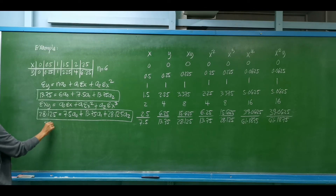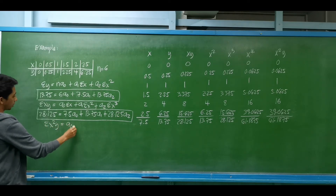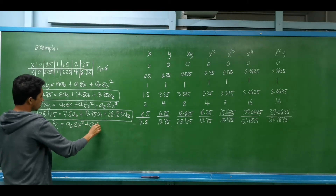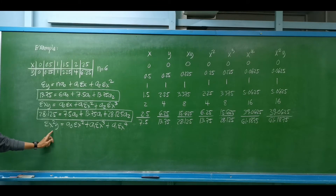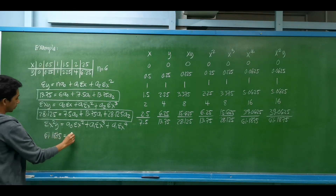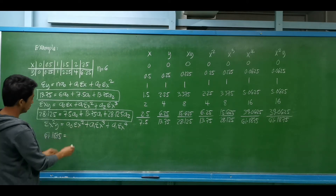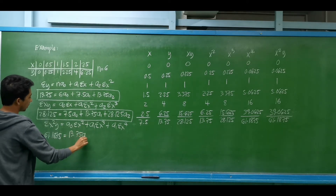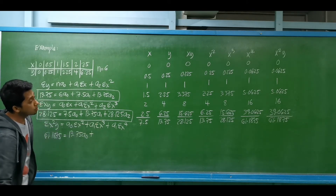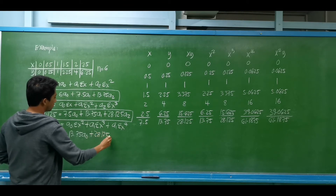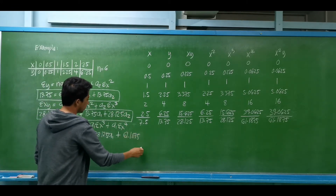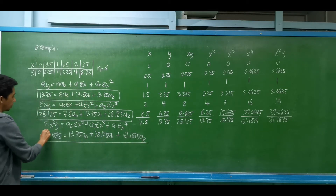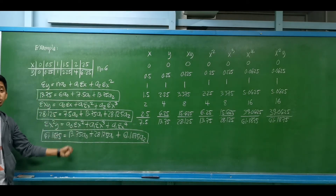The third equation: 61.1875 = 13.75·a₀ + 28.125·a₁ + 61.1875·a₂. We may convert these to matrix form or analyze them algebraically since we have three equations and three unknowns.